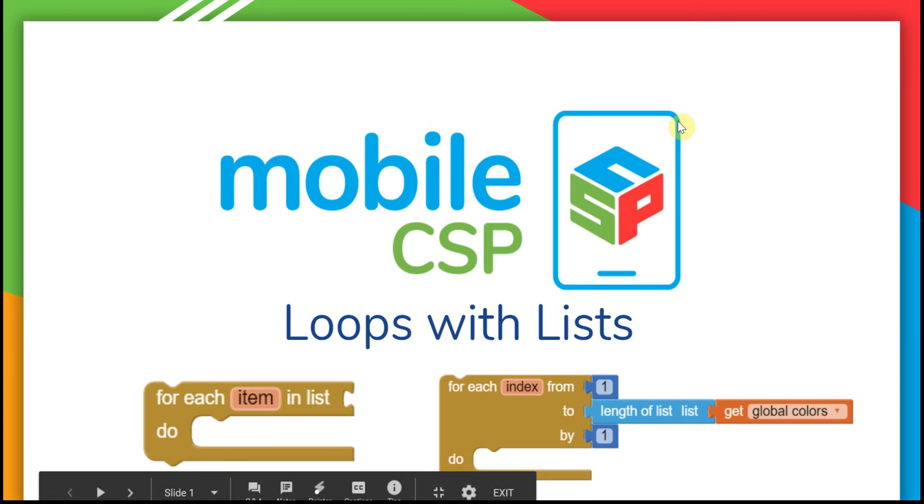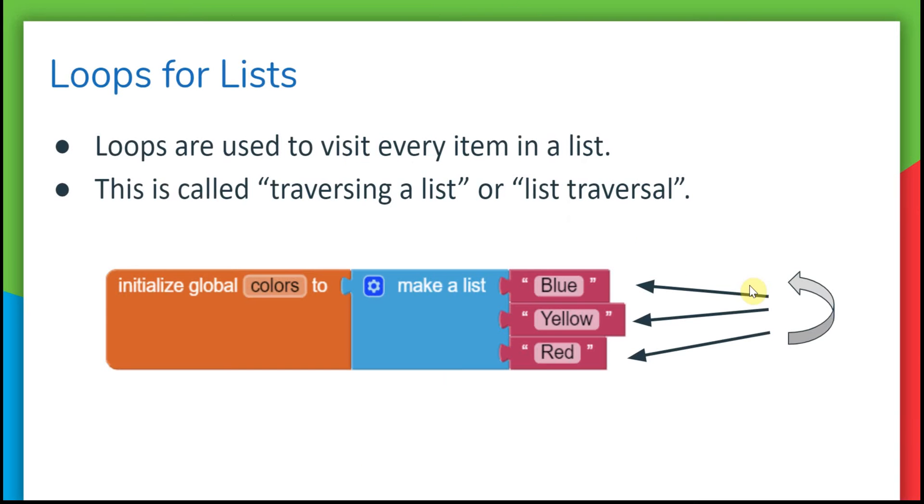In the last lesson, we wrote a quiz app that used three different lists. In this lesson, we'll learn how to use loops with lists. Loops can be used to visit every single item in a list. This is called traversing a list or list traversal.